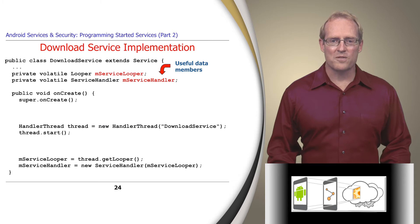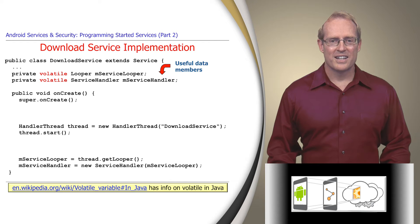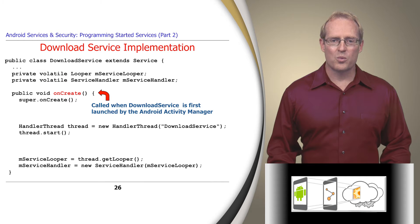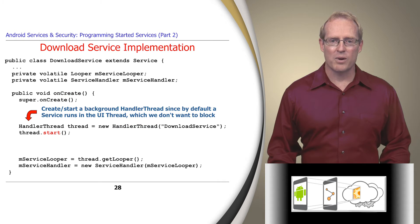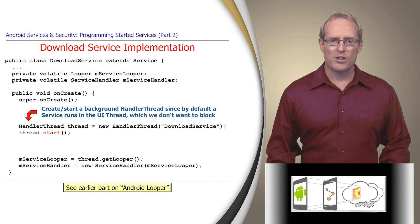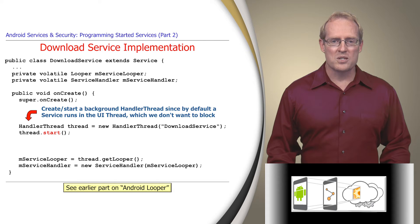The DownloadService class also defines several data members that store a looper and an instance of the service handler. These data members are defined as volatile to ensure they're properly visible to the background handler thread. The onCreate hook method is called when the DownloadService is first launched by Android's ActivityManager service. It creates and then starts a handler thread. By default, a service runs in the user interface thread, which we don't want to block during the image download process, so the DownloadService uses the handler thread to retrieve the image concurrently in the background.